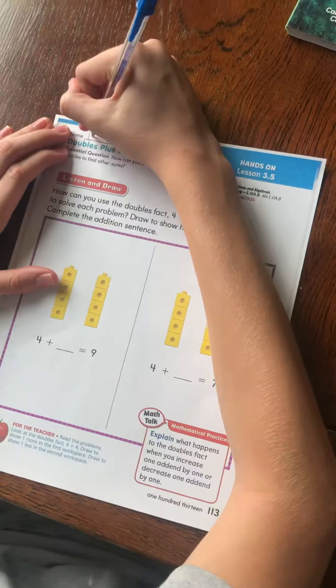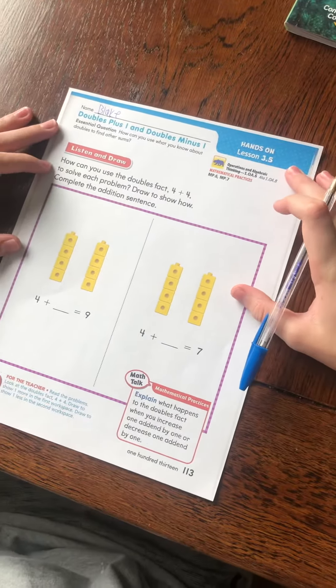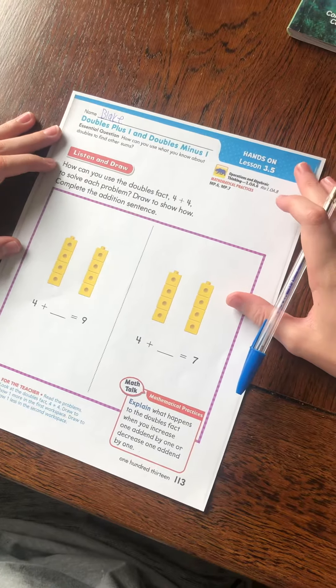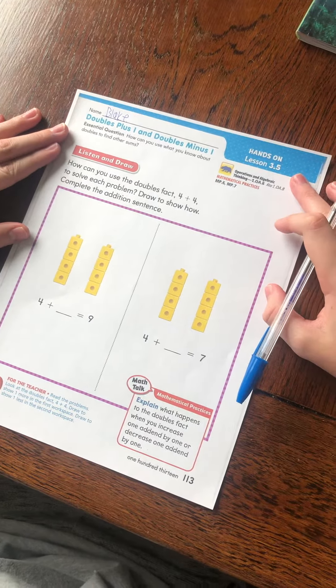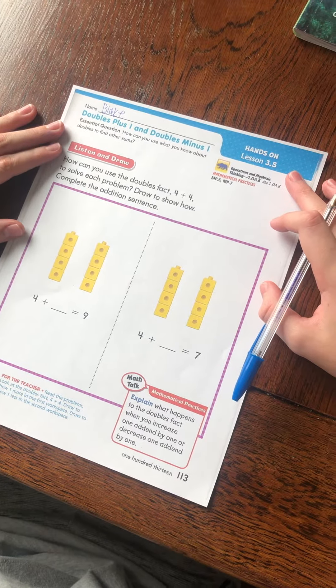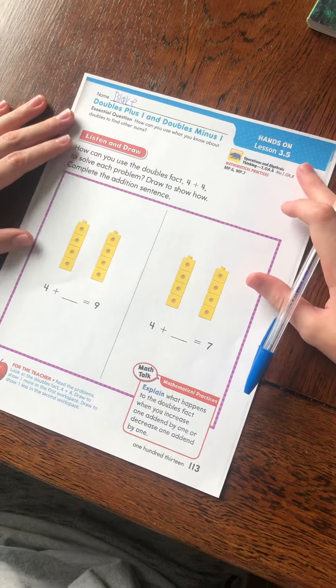So the first thing we do is write our name. And the central question is, how can you use what you know about doubles to find other sums? The directions say, how can you use the doubles fact 4 plus 4 to solve each problem? Draw to show how. Complete the addition sentence.